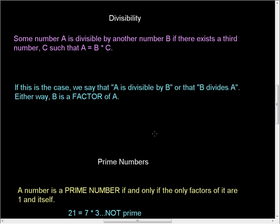Some number A is divisible by another number B if there exists a third number C such that A is equal to B times C. Let's put that in normal terms here.